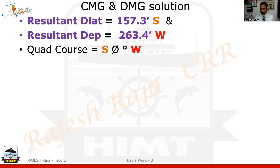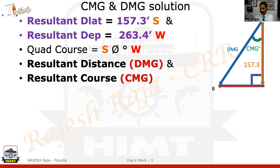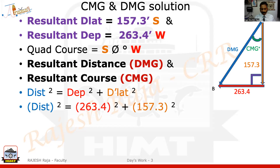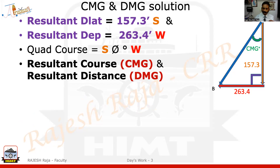These are the two known values. I'll quickly draw a simple quadrantal triangle on southwesterly: this is DMG and this is CMG. D-lat is 157.3 and departure is 263.3 — I already have two sides. The easiest method is Pythagoras theorem. Applying it and putting all the values, I get DMG = 306.8 nautical miles. So I've already found one answer — DMG. I could have found theta (CMG) first and then the distance, but I chose this method.